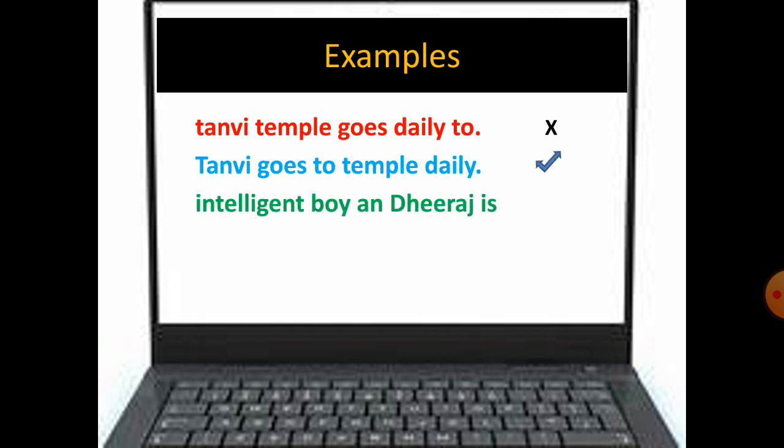The third example is: intelligent boy and Dheeraj is. Again, this group of words does not make any sense, so that is why it is not a sentence. But if I talk about another example, the fourth one: Dheeraj is an intelligent boy. In this example, you can see words have been properly arranged. That is why this is a sentence.